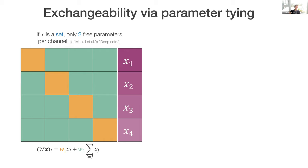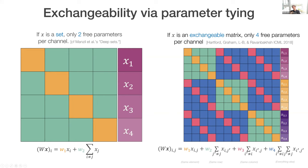So, what would happen if you do this? Well, if your input is a set, it turns out that you only get to have two free parameters per channel, which is to say per output neuron that you would achieve. This result was achieved by a couple of different papers, but most thoroughly by Manziel et al's deep sets paper. In follow-up work to that work and with some co-authors, notably my student Jason Hartford, Devin Graham, and Siamak McRavenbosch, we showed that if x is an exchangeable matrix, then you only get to have four free parameters per channel that correspond to one parameter for the same element, one parameter for all elements in the same row, one parameter for all elements in the same column, and one parameter for everything else.